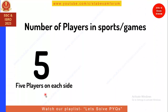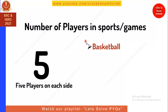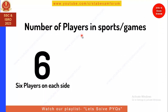Five players on each side: the important game here is basketball. Students often forget this — basketball has five players on each side. Moving to six players on each side: that is volleyball, which you may have played in school. Volleyball has six players on each side.